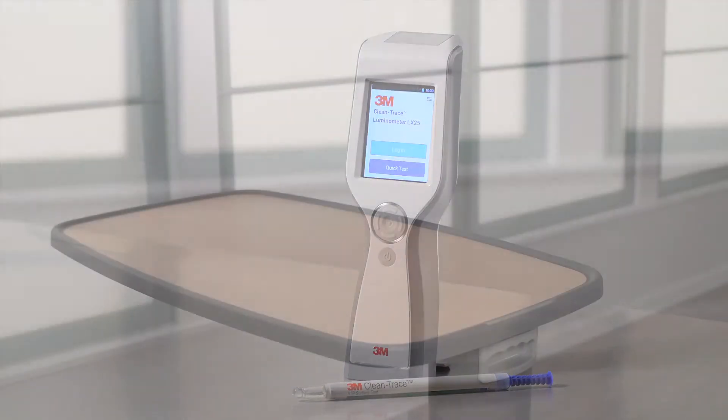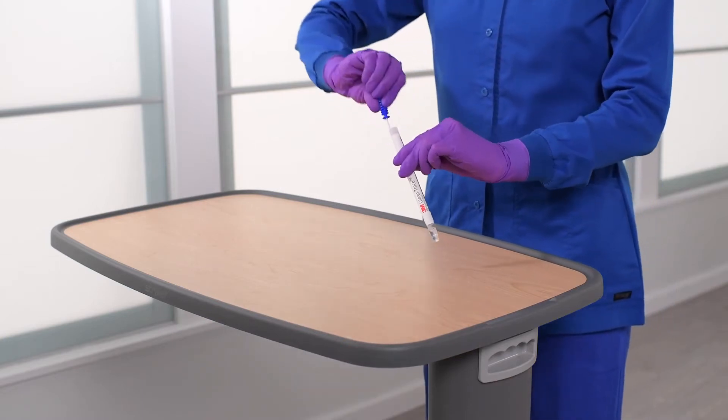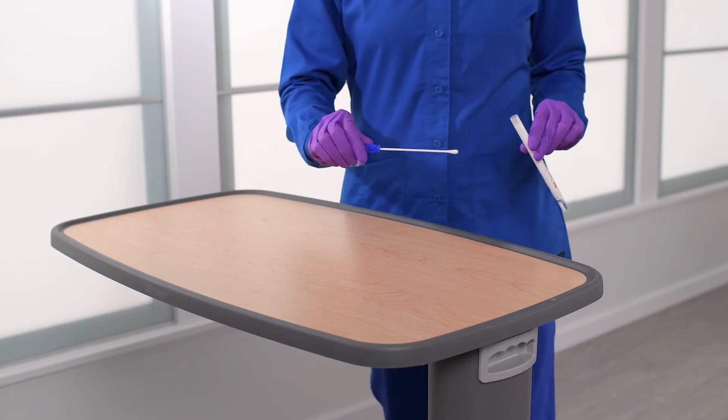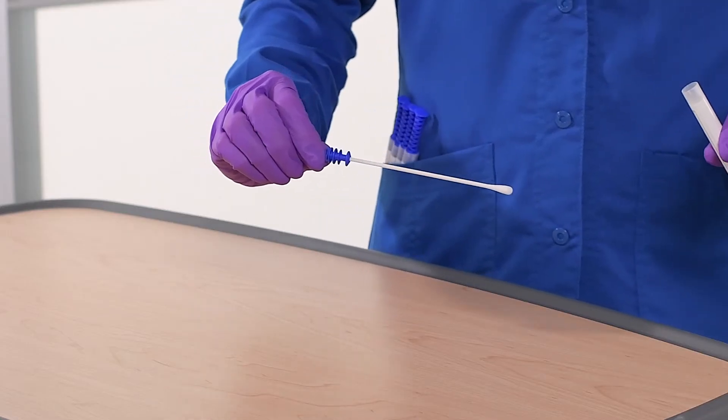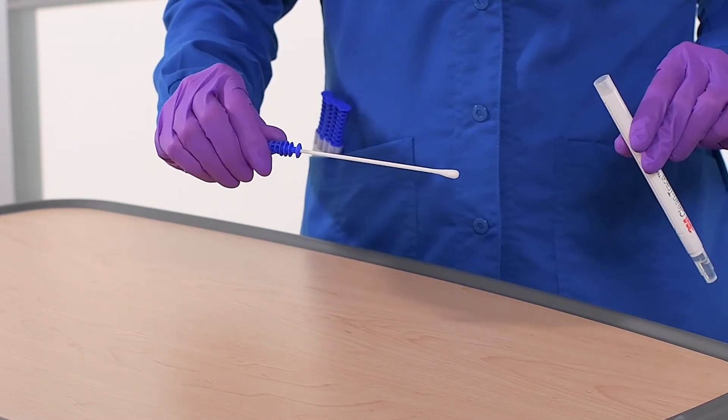Before you begin, make sure your surface is dry. When you are ready to collect your sample, remove the Surface Test UXC from the device sleeve taking care to touch only the blue handle. Do not let the swab touch any surface except that which is to be sampled.